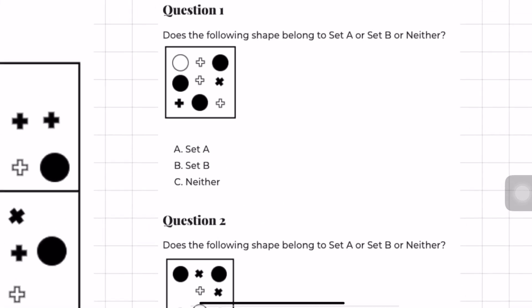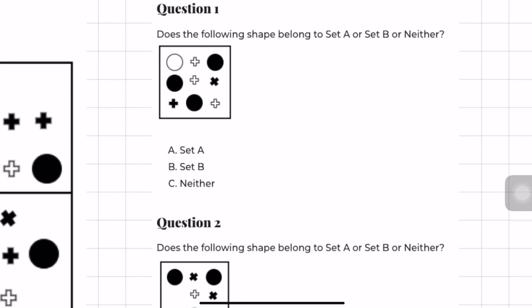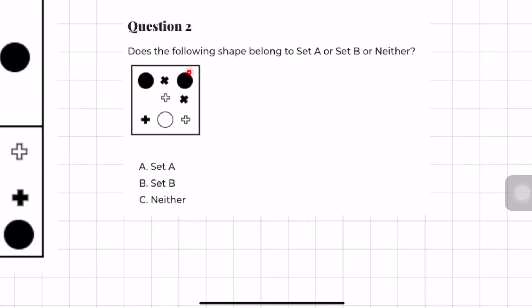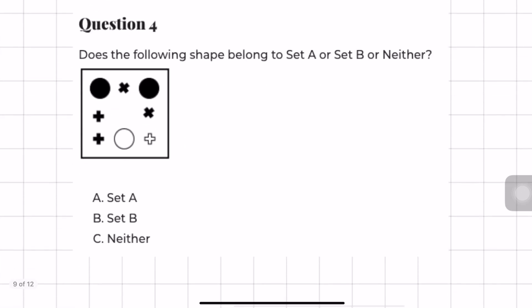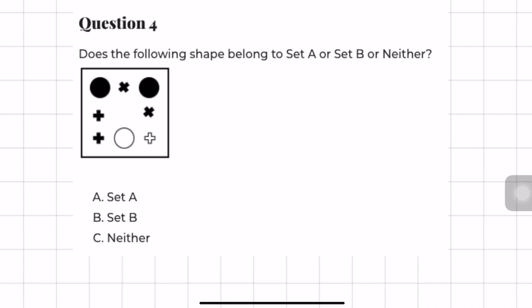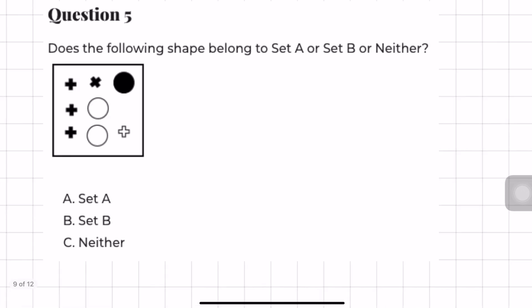Now we can answer the questions. Question one: four pluses — three white, one black — and three circles, three black, one white. Equal counts and opposite colors, so it's set A. Question two: three circles and three pluses, opposite colors — set A again. Question three: three circles and three pluses, opposite colors — set A. Question four: three circles, three pluses, but two black pluses and two black circles and one white plus and one white circle — same colors, so set B. Question five: four pluses but only three circles, so neither.